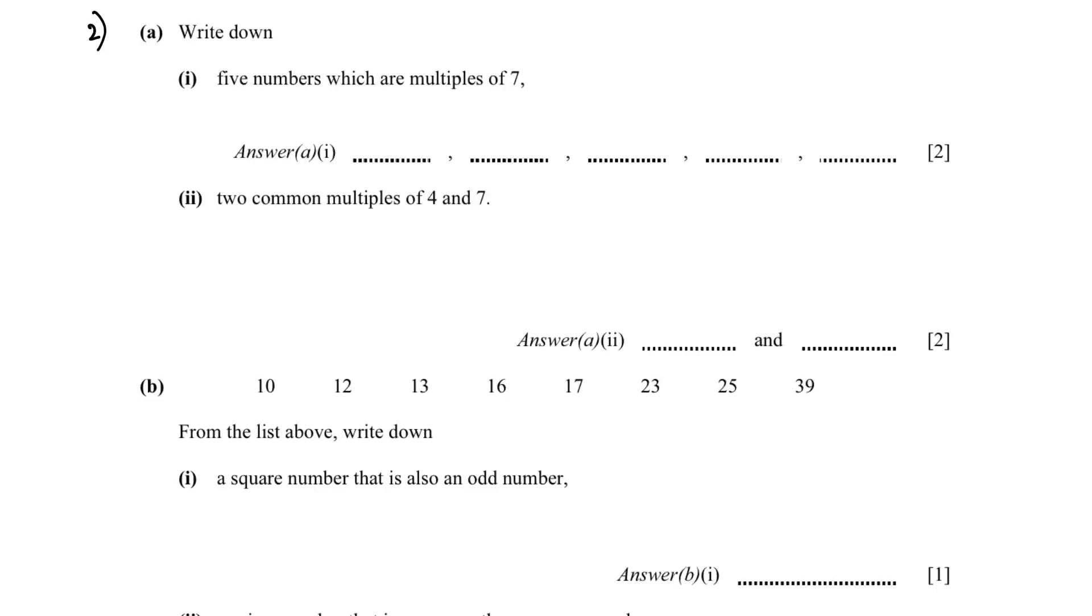Next question. Write down 5 numbers which are multiples of 7. So you can write 7 times 1 is 7, 7 times 2 is 14, 7 times 3 is 21, 7 times 4 is 28, and 7 times 5 is 35.